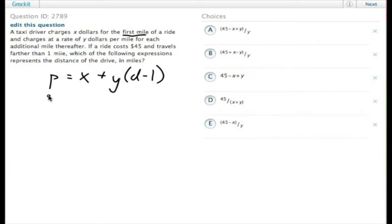In this case, 45 is the price. So we have 45 equals X plus Y times D minus 1.